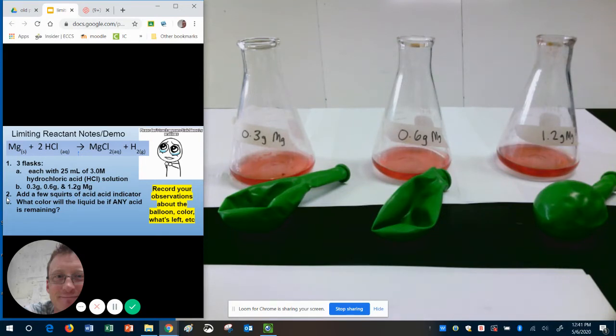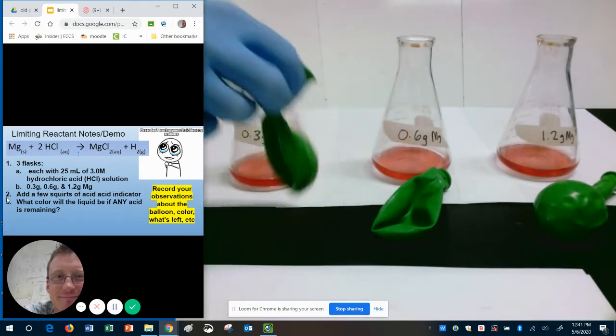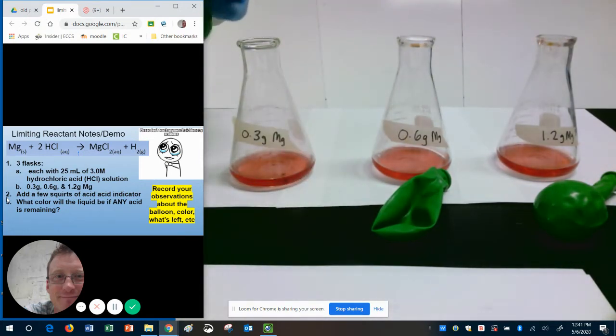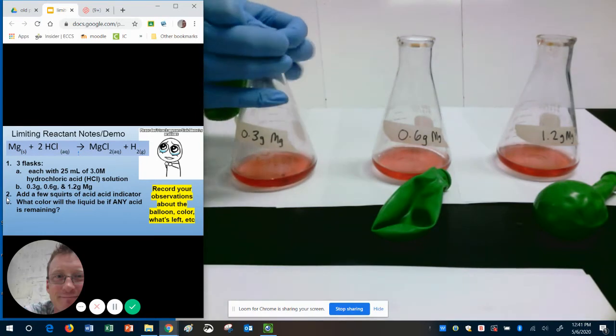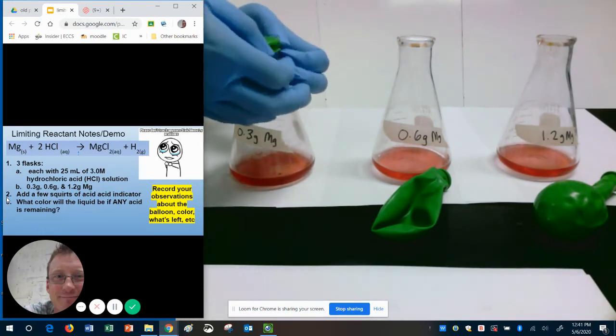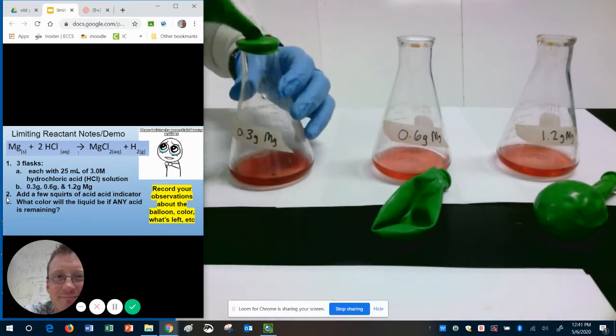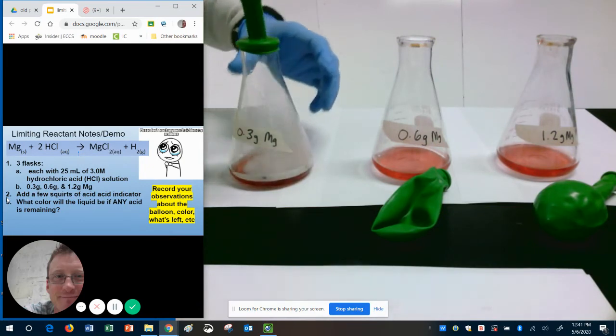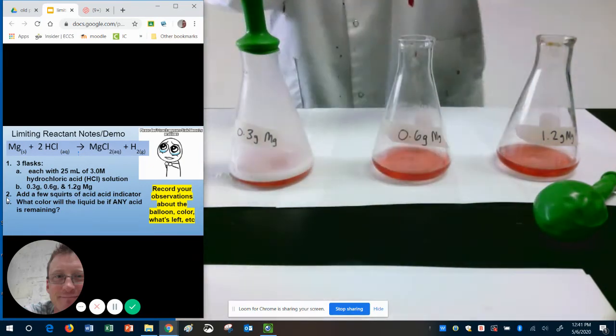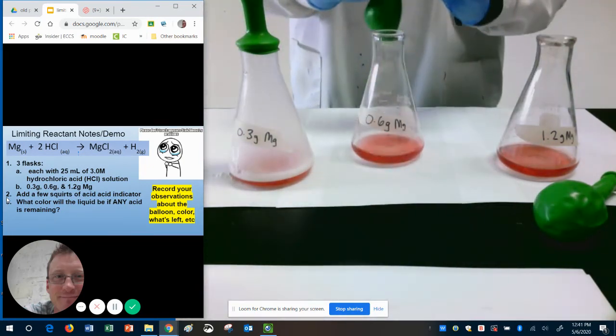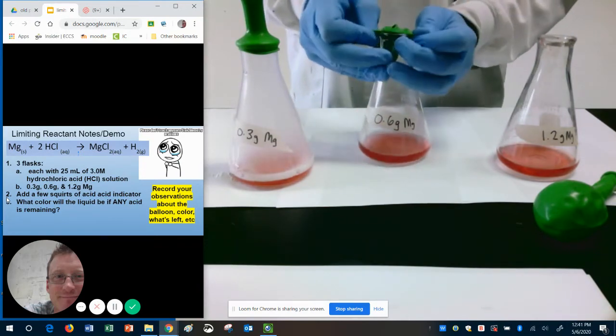Now, I already have the magnesium powder. I put it in the balloons. One, I'm using balloons because it'll trap the gas. Two, it's an easy way for me to add the powder without making a huge mess. So here's the first one.